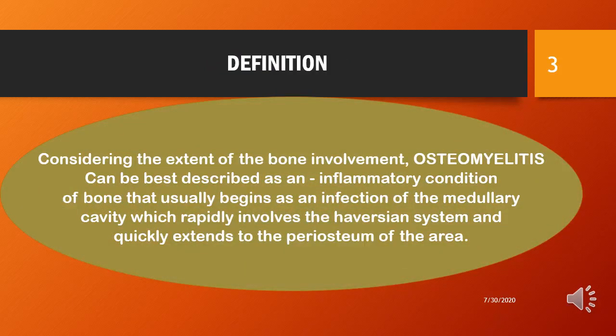Coming to the definition, considering the extent of bone involvement, osteomyelitis can be best described as an inflammatory condition of the bone that usually begins as an infection of the medullary cavity, which rapidly involves the Haversian system and quickly extends to the periosteum of the surrounding area.